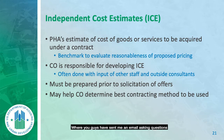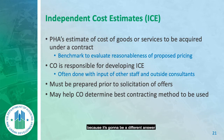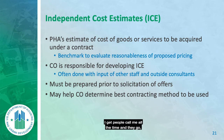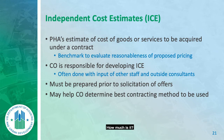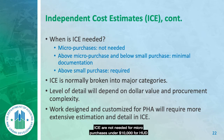Doing the ICE can help the contracting officer determine the best procurement method. When someone asks what the best competitive method is, the first question is: what is the value? If it's $500, the answer is none — don't do a competitive solicitation. ICEs are not needed for micro-purchases, which are under $10,000 for HUD.